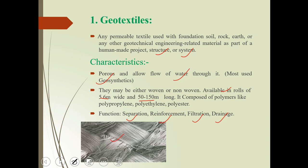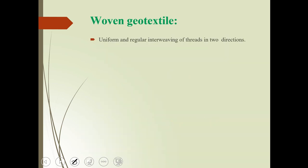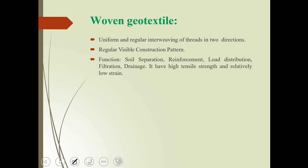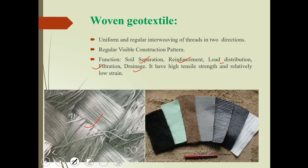This picture shows a woven type geotextile. The woven type has a uniform and regular interweaving of threads in two directions with a regular visible construction pattern. Functions include soil separation, reinforcement, load distribution, filtration, and drainage. Woven geotextile has high tensile strength and relatively low strain.